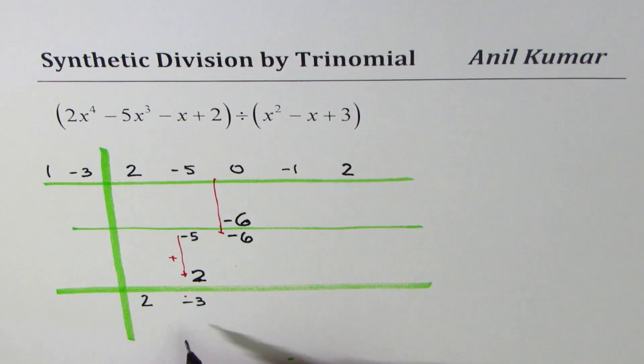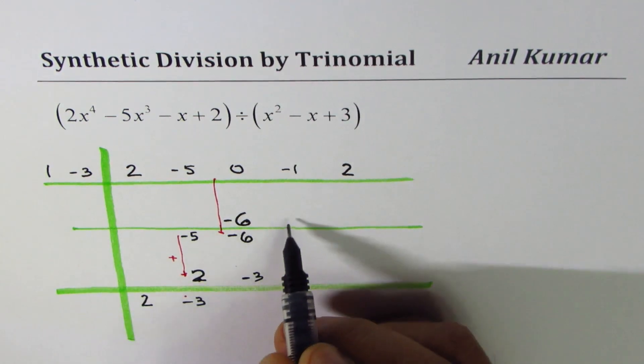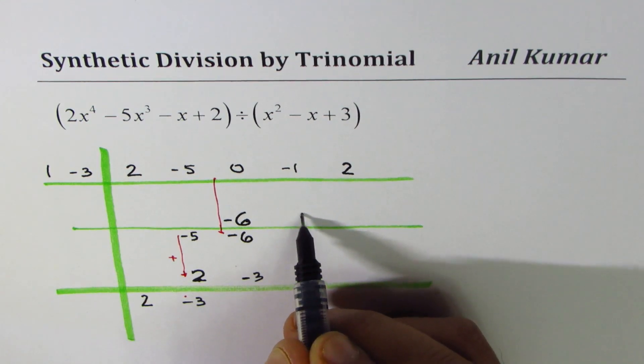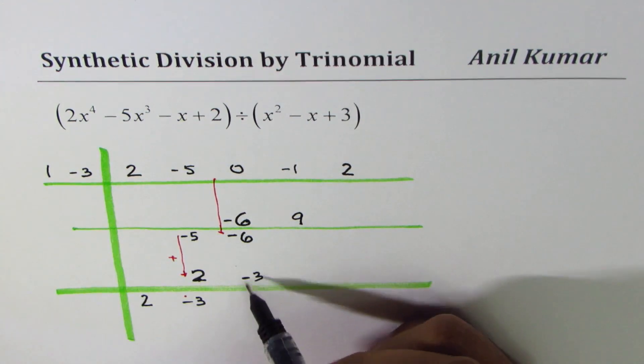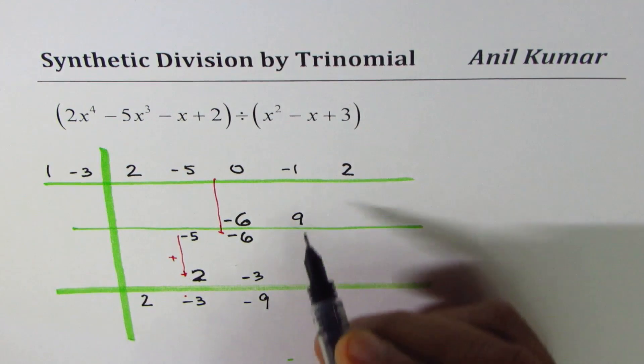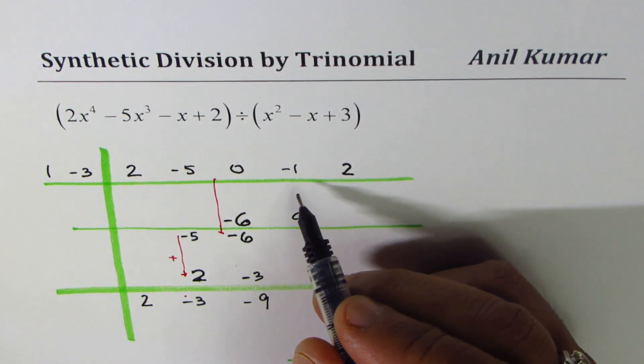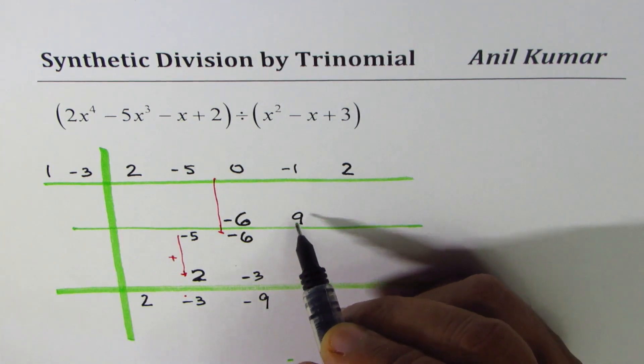Now this process is repeated. That minus 3 will be multiplied by both. When you multiply by 1, the product will be placed above the line which is right at the bottom, so it becomes minus 3 here. When you multiply minus 3 by the second term, you get plus 9, which will be placed above the line second which we introduced. And then we'll add them up. Minus 3 minus 6 gives you minus 9, and minus 1, when you add 2 plus 9, gives you 8.